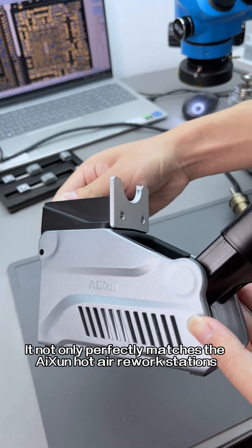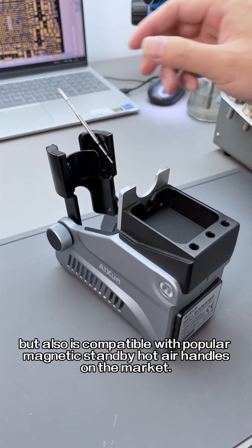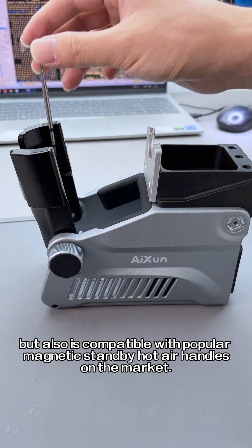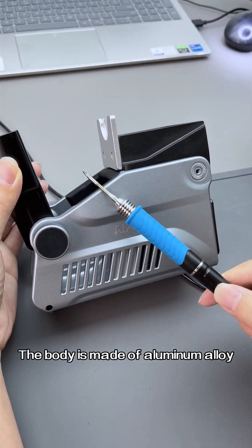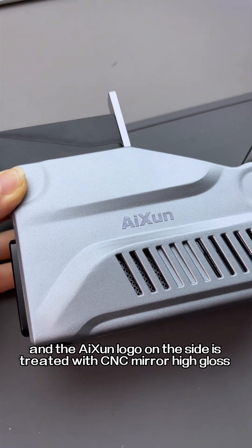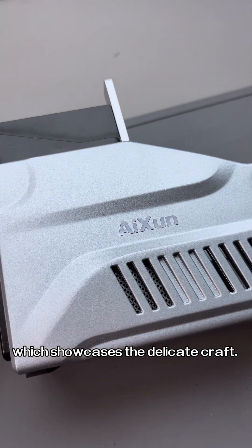It not only perfectly matches the AI Sun hot air rework stations, but also is compatible with popular magnetic standby hot air handles on the market. It can be sold separately. The body is made of aluminum alloy, and the AI Sun logo on the side is treated with CNC mirror high gloss, which showcases the delicate craft.